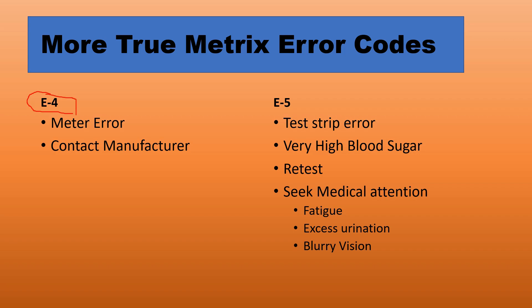E4 means there's something wrong with the meter — in that case you'd want to contact the manufacturer; the number is on the back of the meter. E5 could be a test strip error, or you have extremely high blood sugar. It's recommended you use a new test strip and retest. Seek medical attention if you're having symptoms of very high blood sugar, such as fatigue, excess urination, or blurry vision.